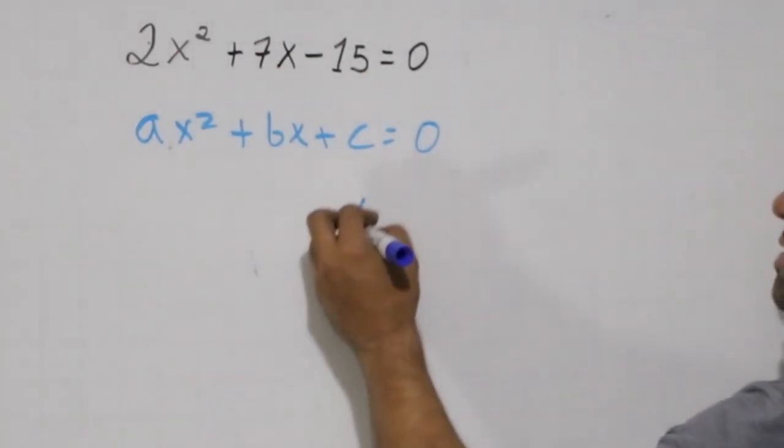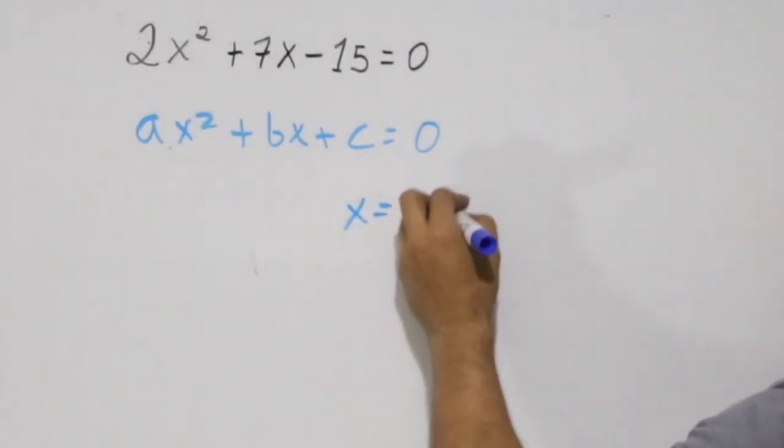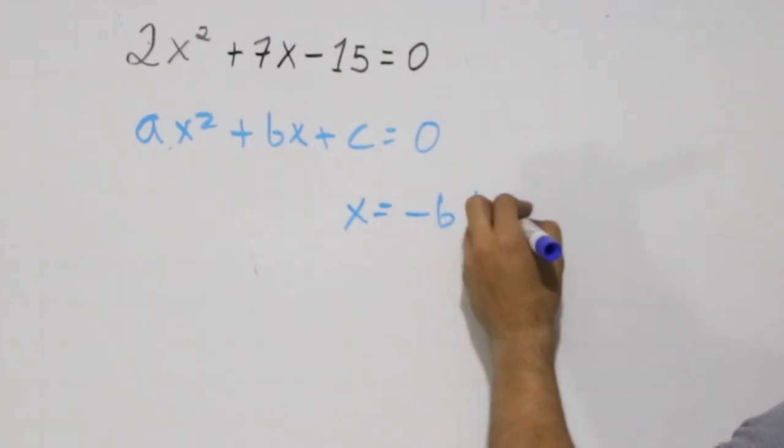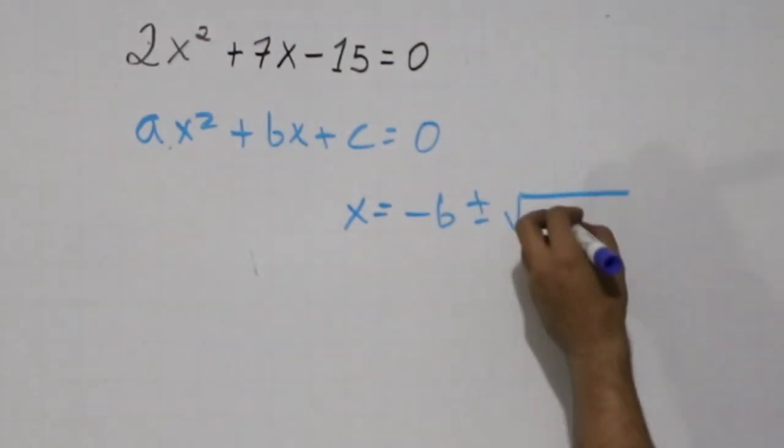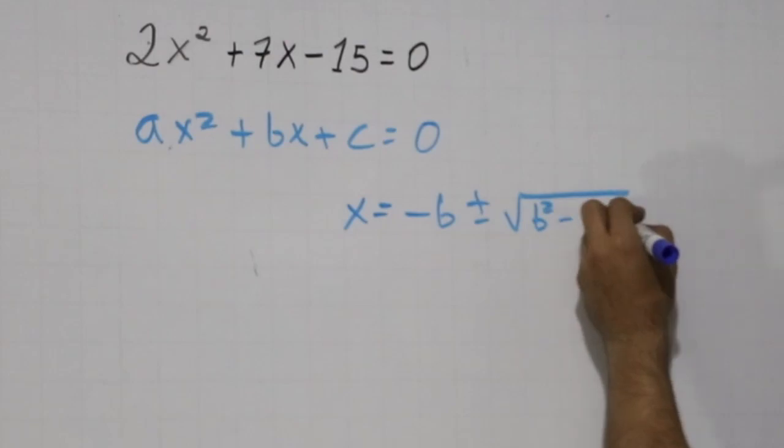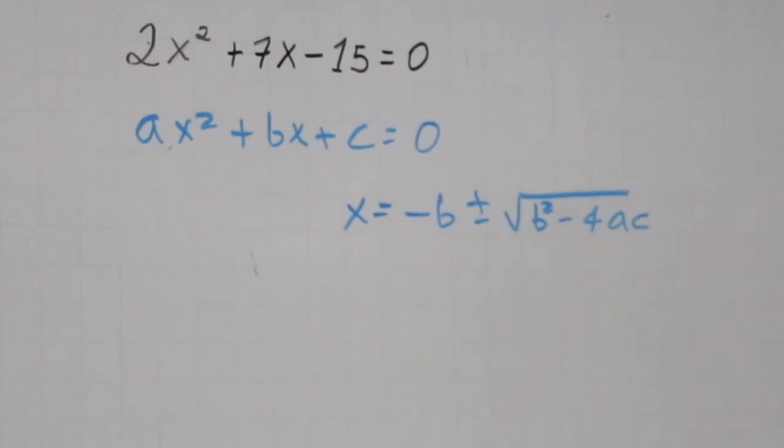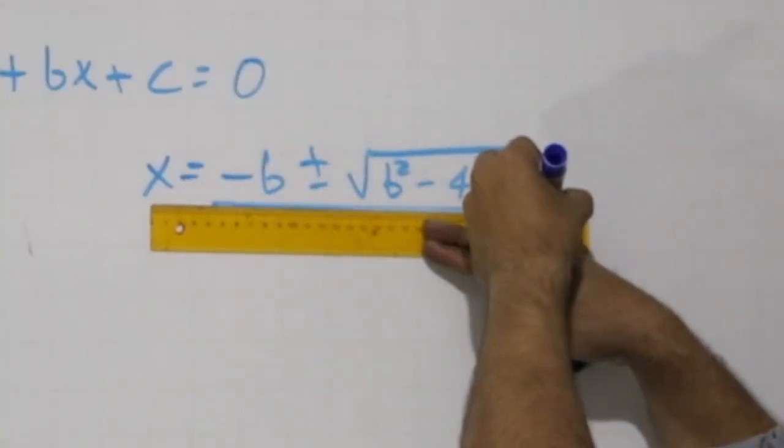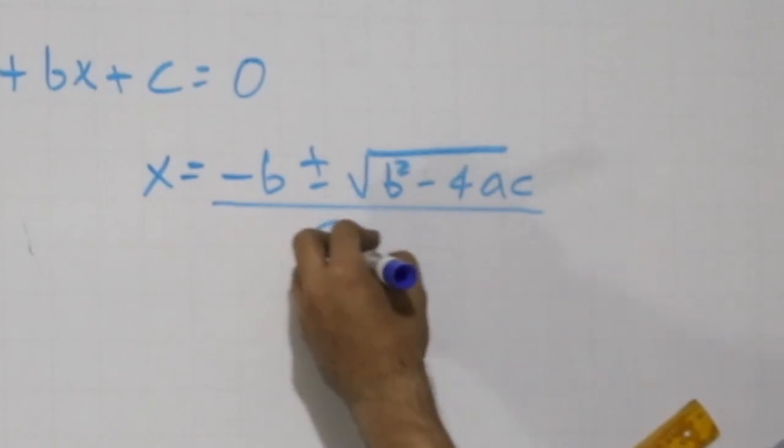Now let's remember how the quadratic formula is. We have x equals minus b plus minus square root b squared minus 4ac, all of that over 2a.